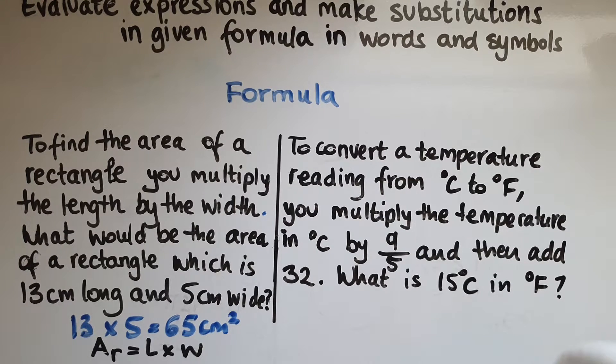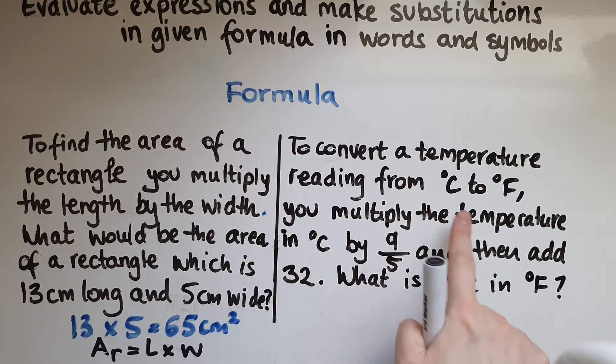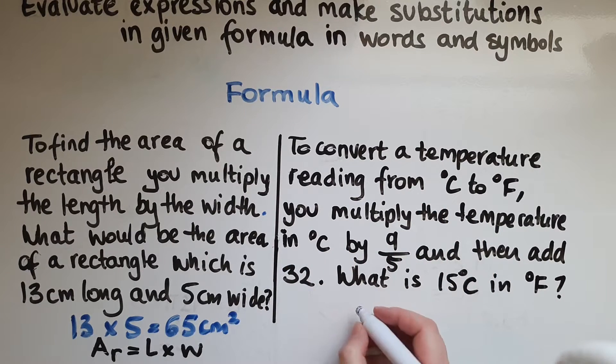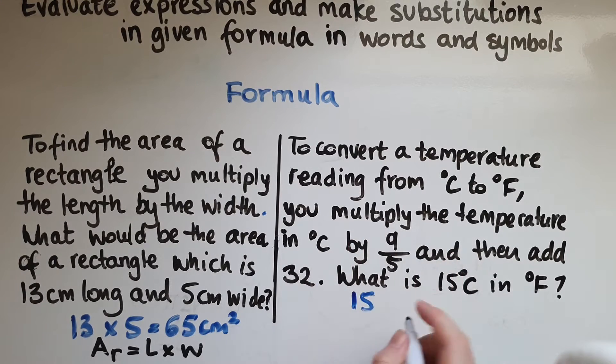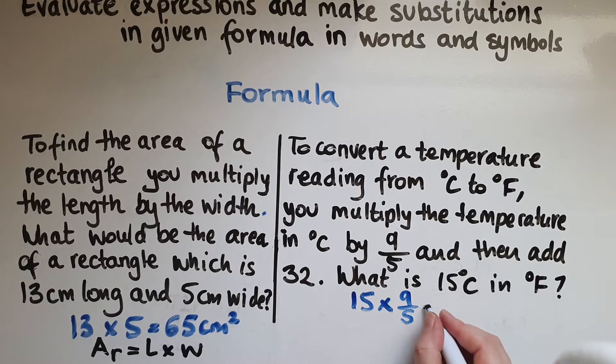So we've got to get the temperature in degrees Celsius which is 15, so 15, then multiply the temperature by 9 over 5 and then add 32.